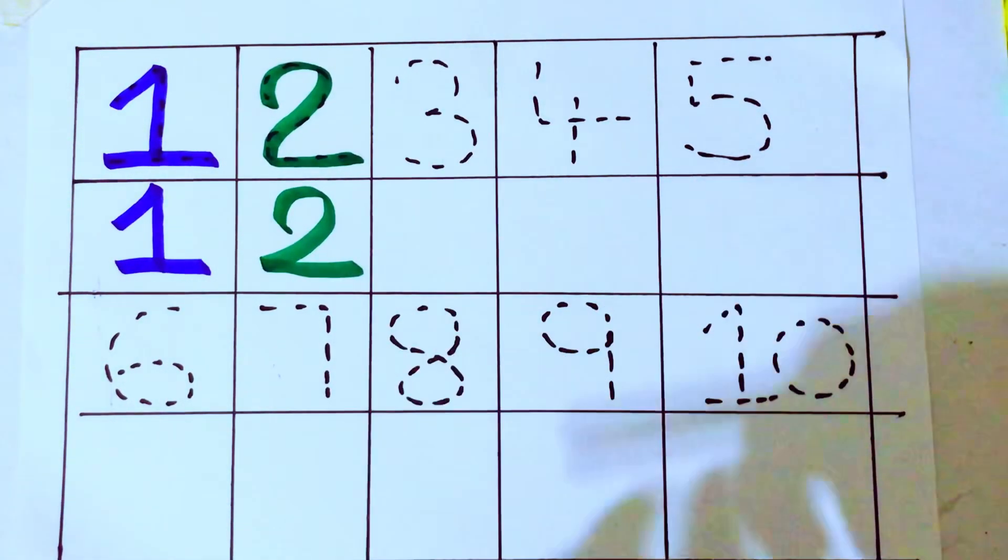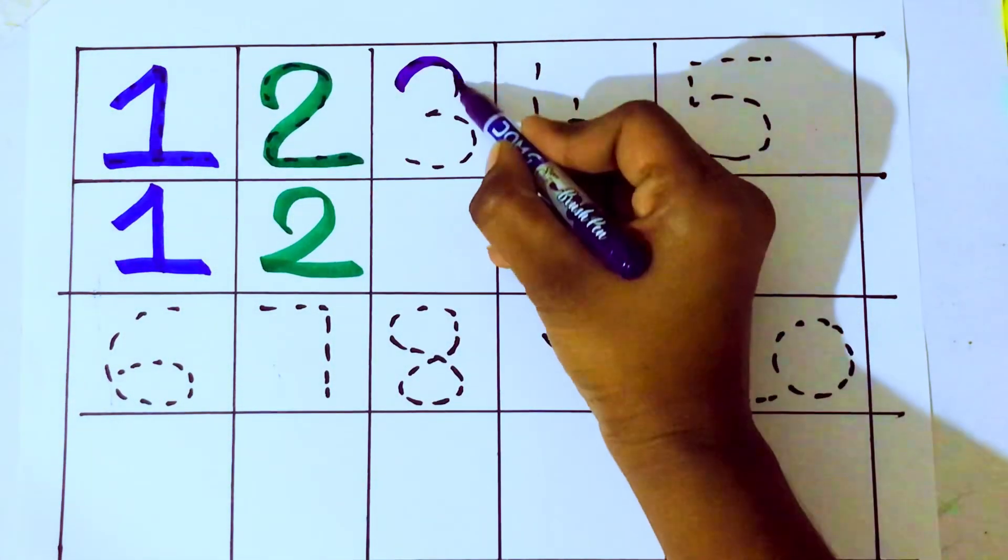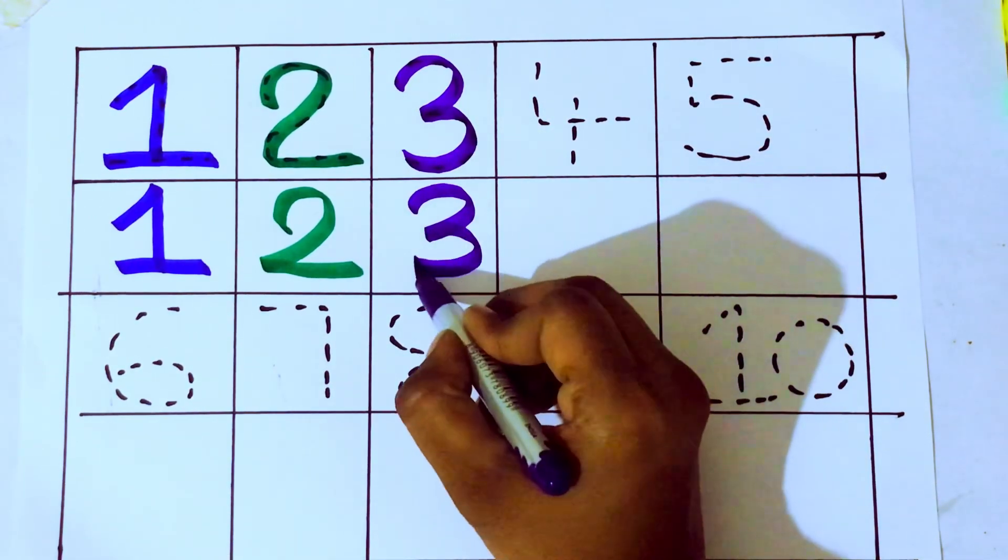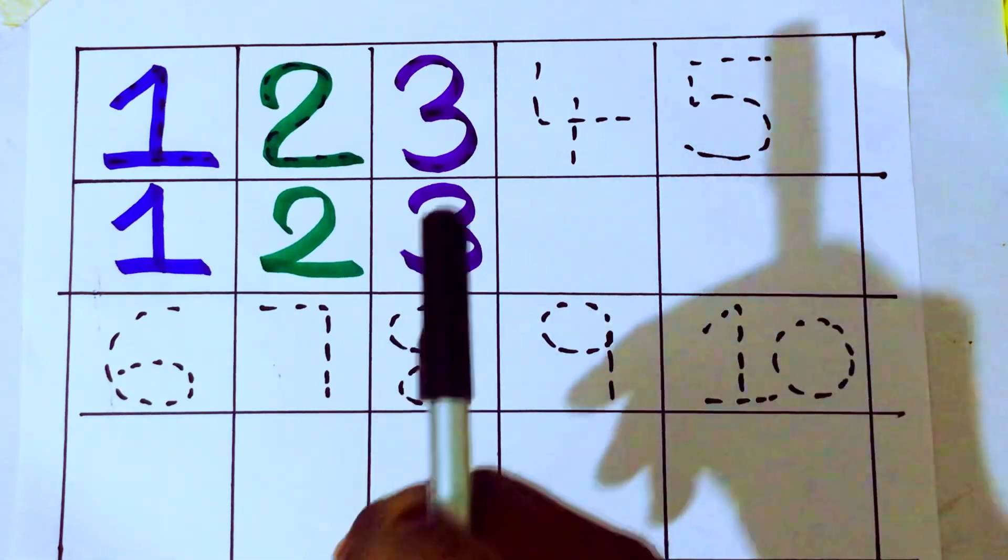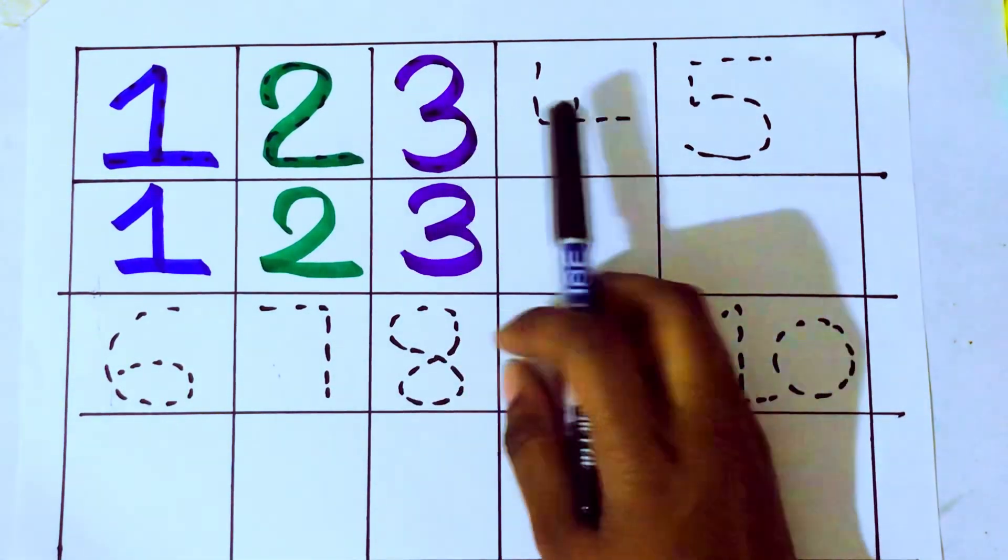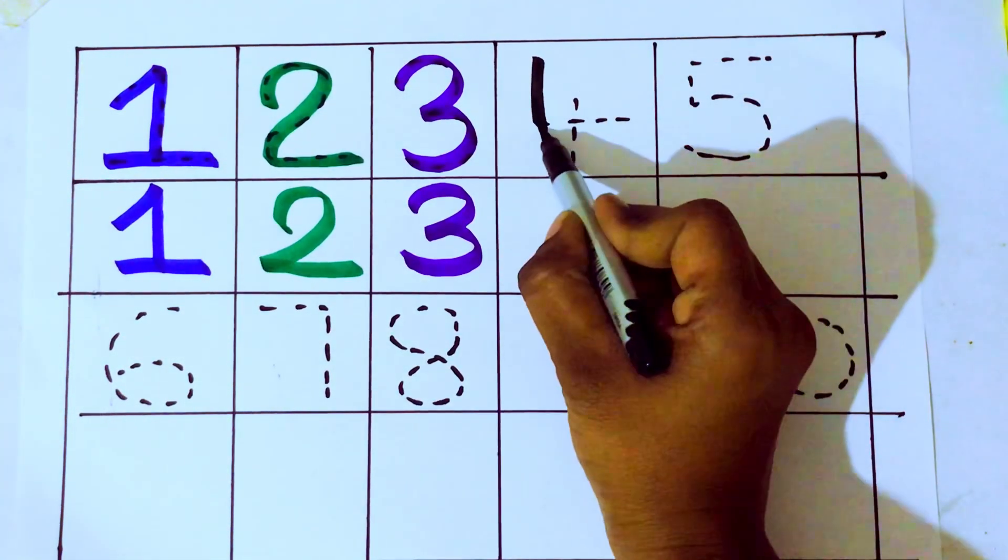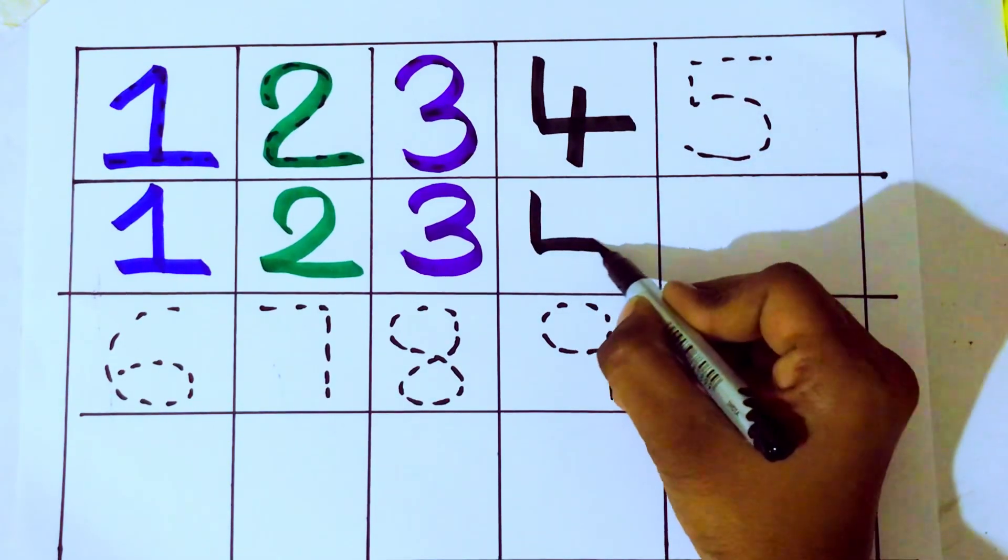Purple color. 2 after 3. Which number kids? 3. 3. T-H-R-E-E. 3. Black color. 3 after 4. Number 4. F-O-U-R. 4. F-O-U-R. 4. Which number kids? 4. Number 4. F-O-U-R. 4.